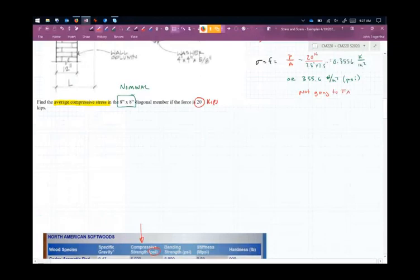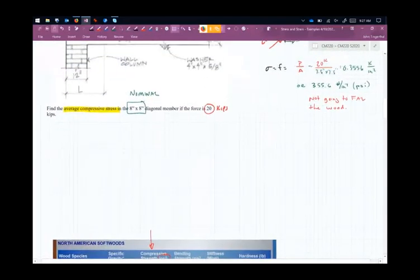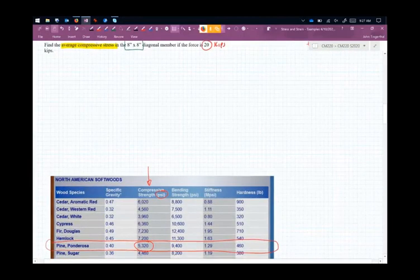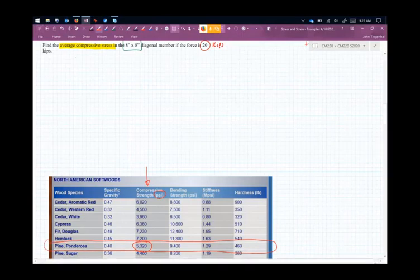But why do you think it's so low? I mean, that's less than 10 percent of its capacity: 355 versus 5,000. So why do you think that's so low? Anyone have an idea?